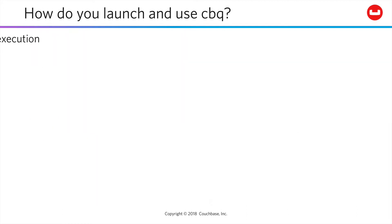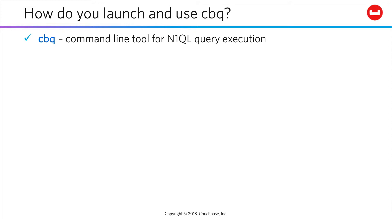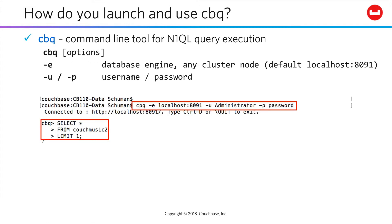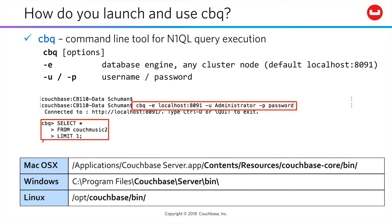Alternatively, you can point the command line CBQ tool at any node in your cluster, provided that you have the necessary credentials to access that node and query the bucket you specify. You can find CBQ in these locations, depending on your operating system.